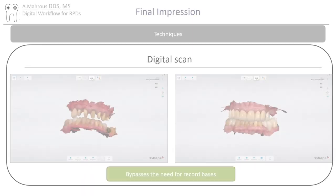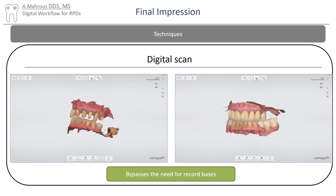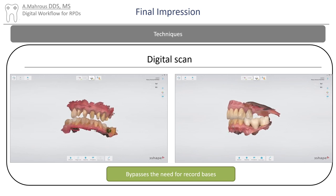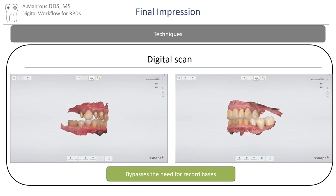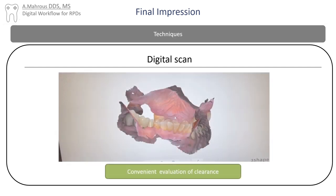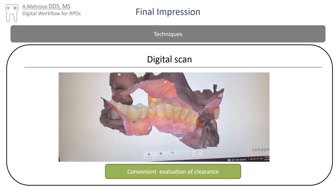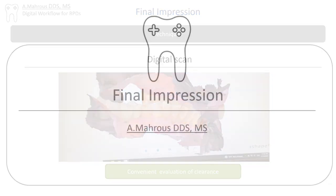After the scans are complete, the jaw relation record can be made. The advantage here is that there's no need for record bases if there are less than three occlusal stops. This feature also allows for the inspection of the clearance for rest seat preparations during the final impression stage.